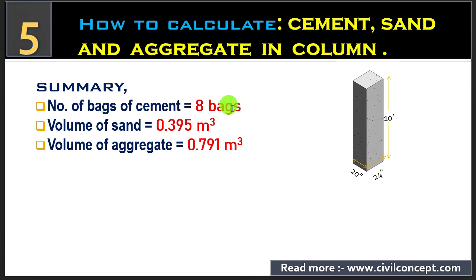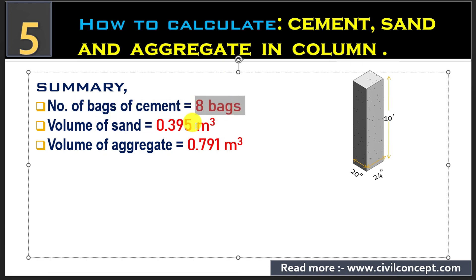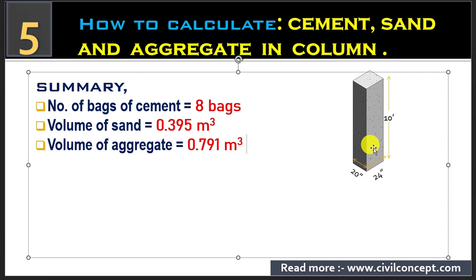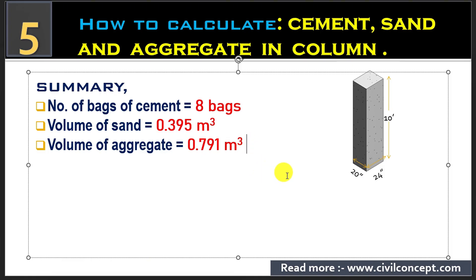In summary: for this column dimension, we need 8 bags of cement, volume of sand is 0.395 meter cube, and volume of aggregate is 0.791 meter cube. In this way we can calculate the cement, sand, and aggregate for any dimension of column. Please like this video and subscribe to this channel for new updates about civil engineering.